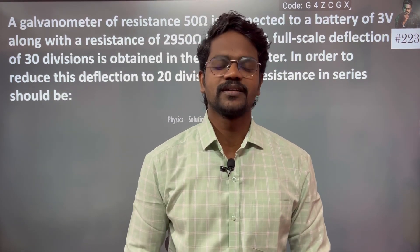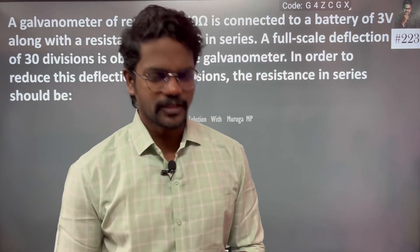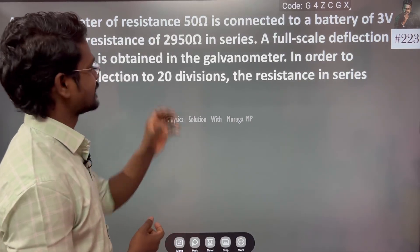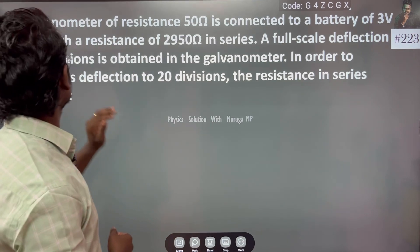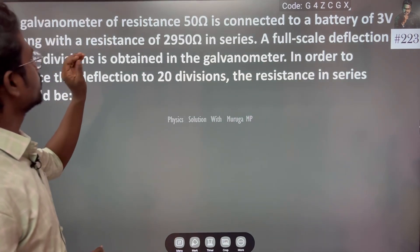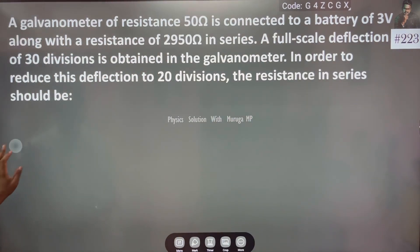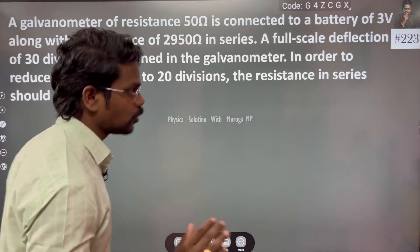Hi everyone. I am going to talk about problem 223. A galvanometer of resistance 50 ohm is connected to a battery of 3 volt along with a resistance of 2950 ohm in series. I am going to talk about a galvanometer with a voltmeter.